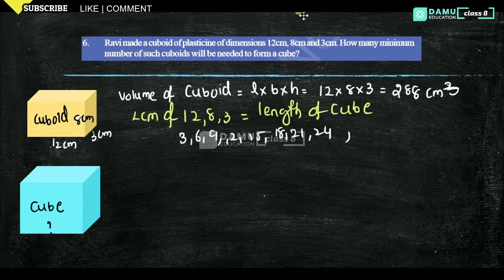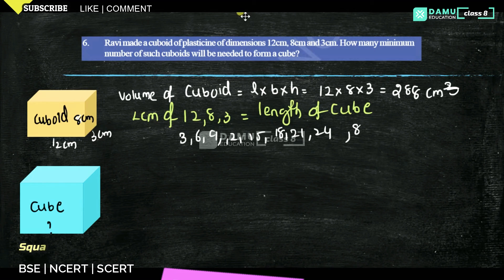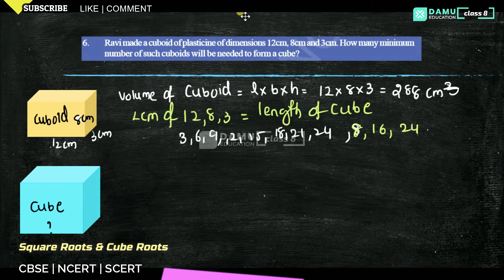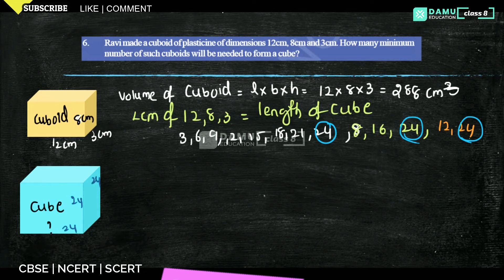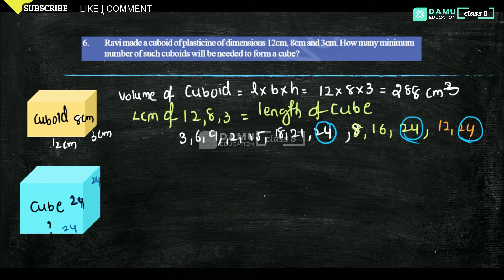Again for 12: 12, 24. So the least common multiple is 24. Therefore 24 is the length of the cube — the length of the cube will be 24.